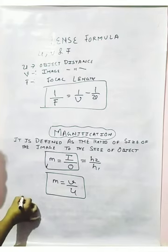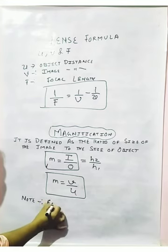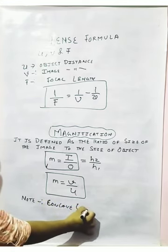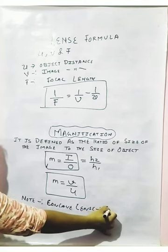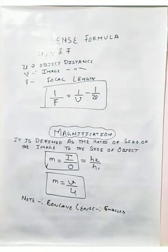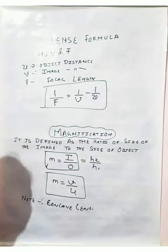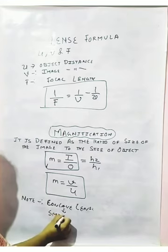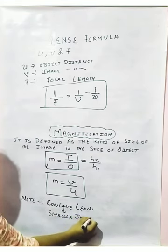You have to remember that a concave lens always gives smaller images.